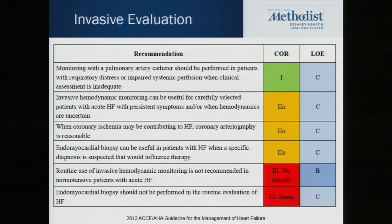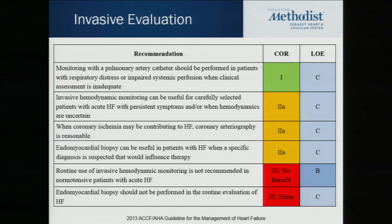Invasive evaluations: we use a lot of Swan-Ganz catheters or pulmonary artery catheters, typically and almost always in the hospital. The Class I recommendation for using a pulmonary artery catheter is in those folks with respiratory distress or impaired perfusion when clinical assessment alone is inadequate. Class 2A recommendations apply to patients with acute heart failure with persistent symptoms when hemodynamics are uncertain. Coronary evaluation, including coronary angiogram, is also reasonable if you suspect coronary ischemia as the underlying etiology. Myocardial biopsies are currently Level 2A evidence and can be useful when you suspect a specific diagnosis that would actually change therapy.